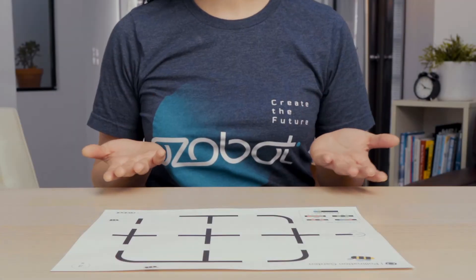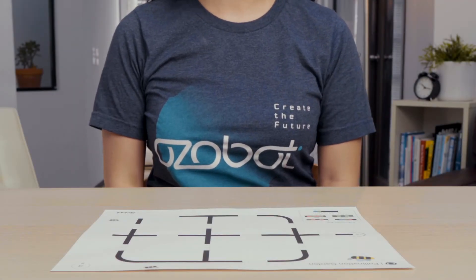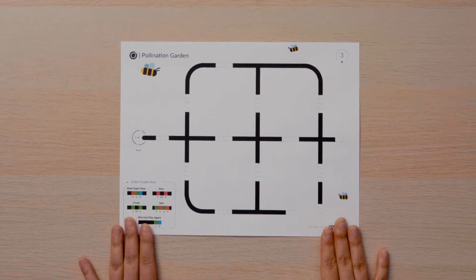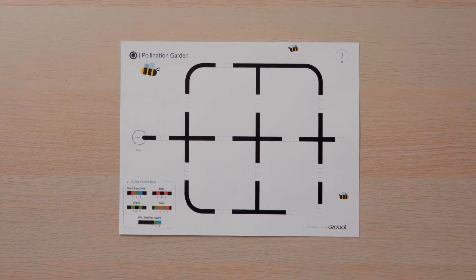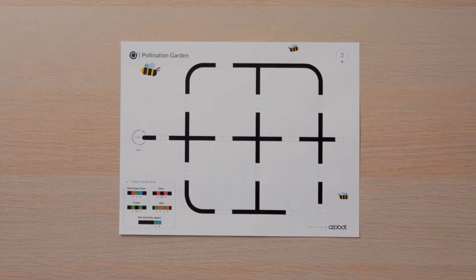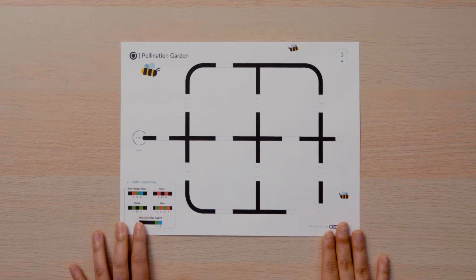Now that you know about pollinators, it's time to create your interactive model. You will begin with the pollination garden map. The map has multiple lines or pathways for your bot to travel around with 14 missing color codes. In the bottom left of your map is the color code key to help you put in the correct color sequences to program your bot to act like a pollinator.